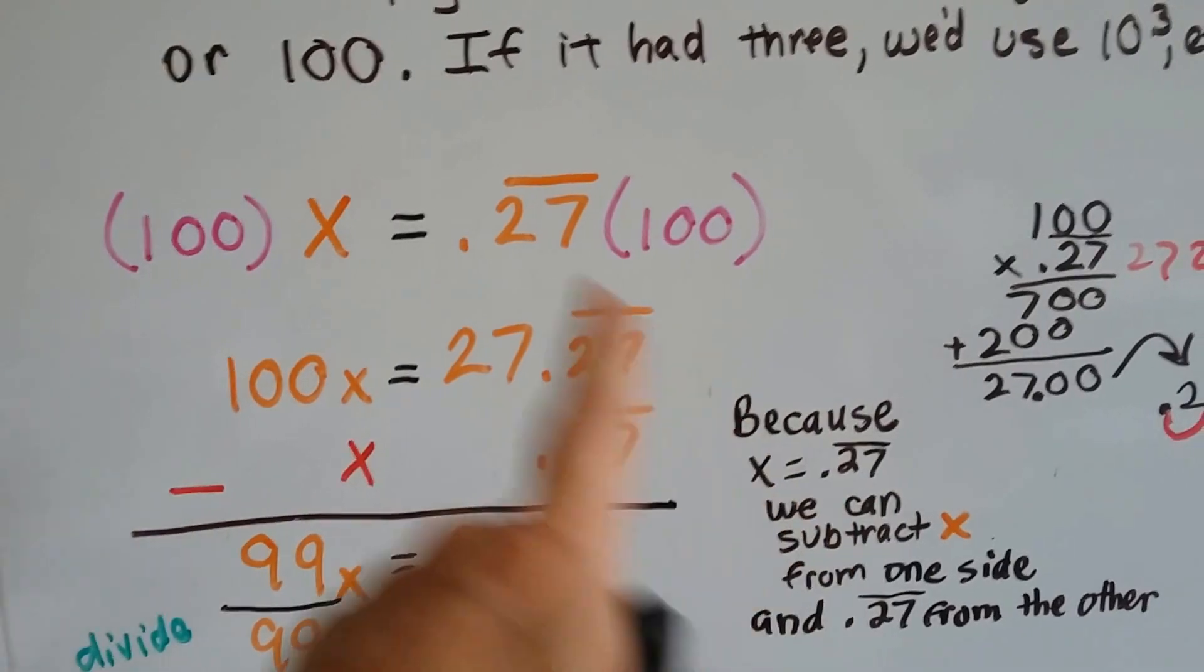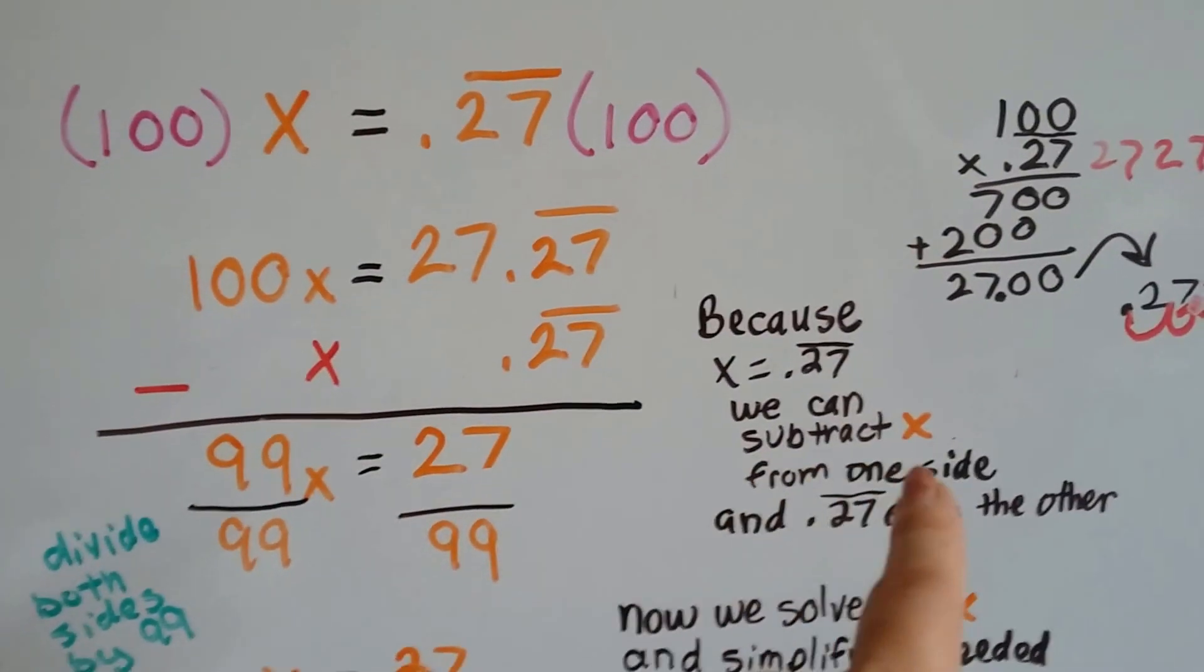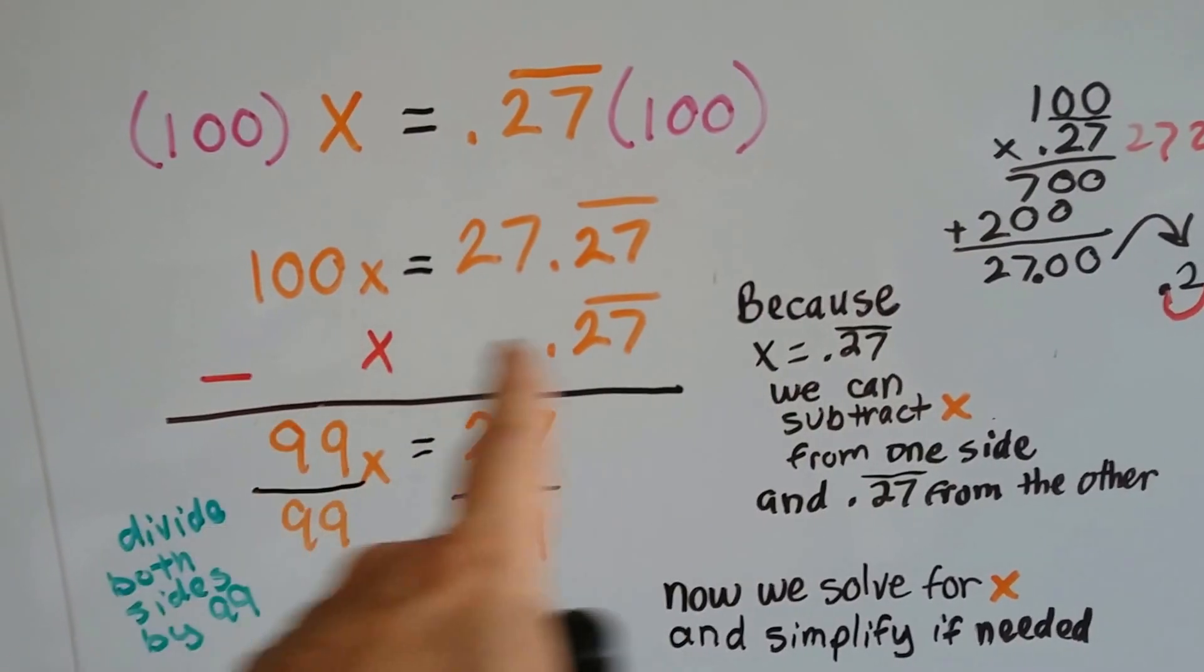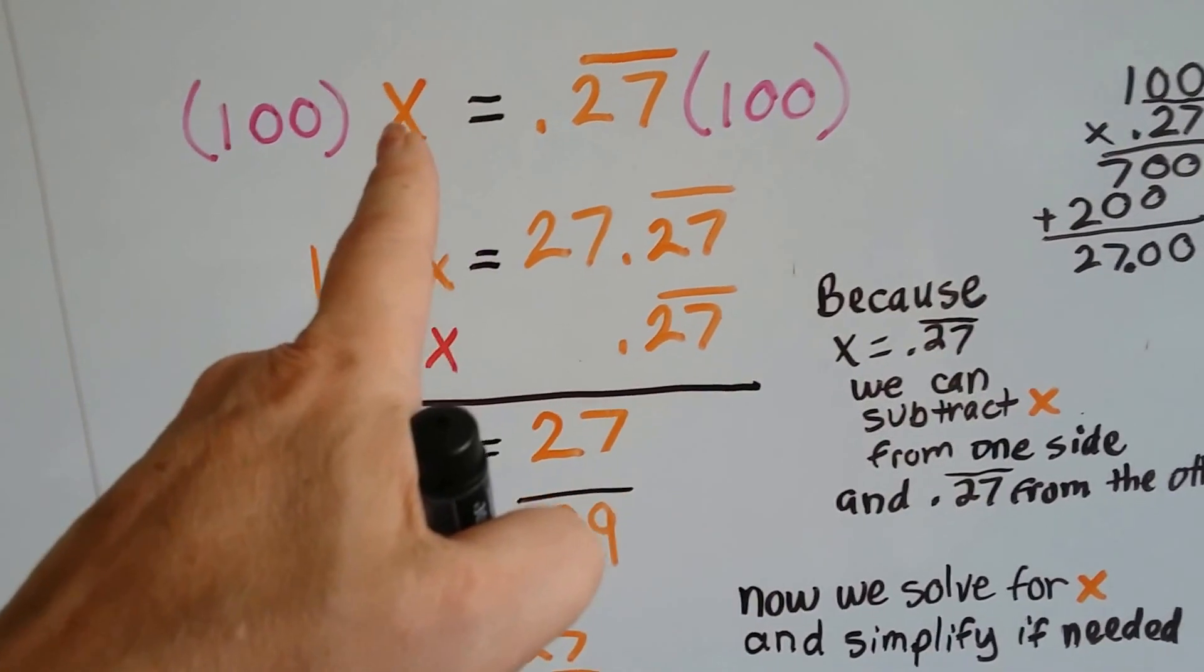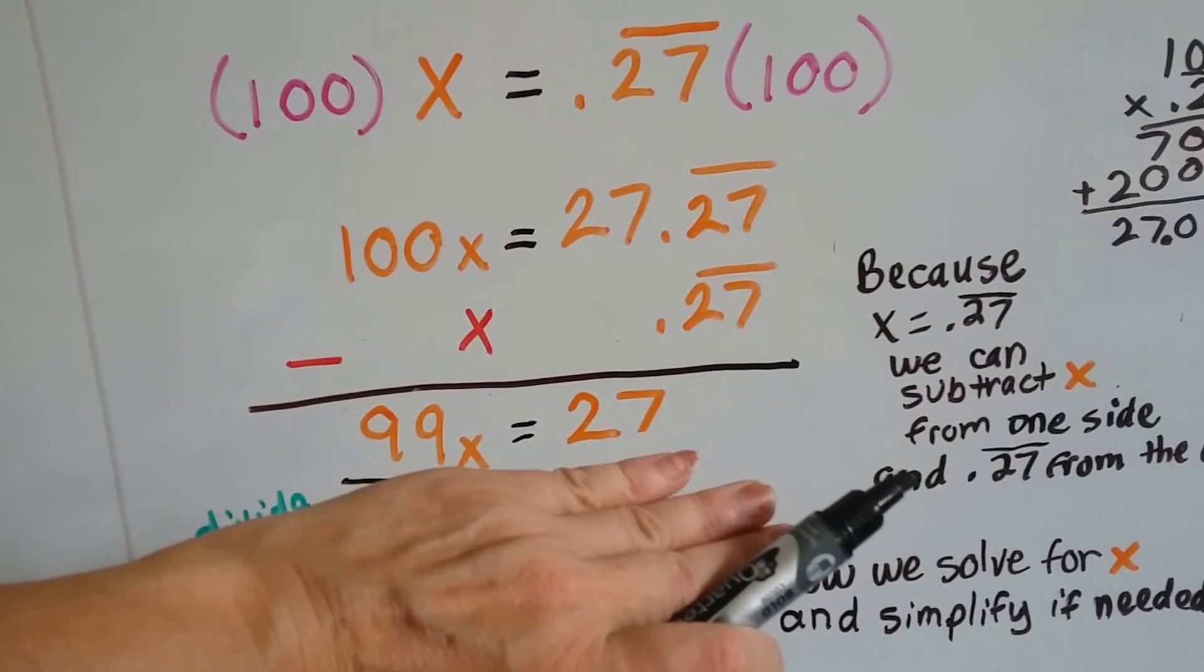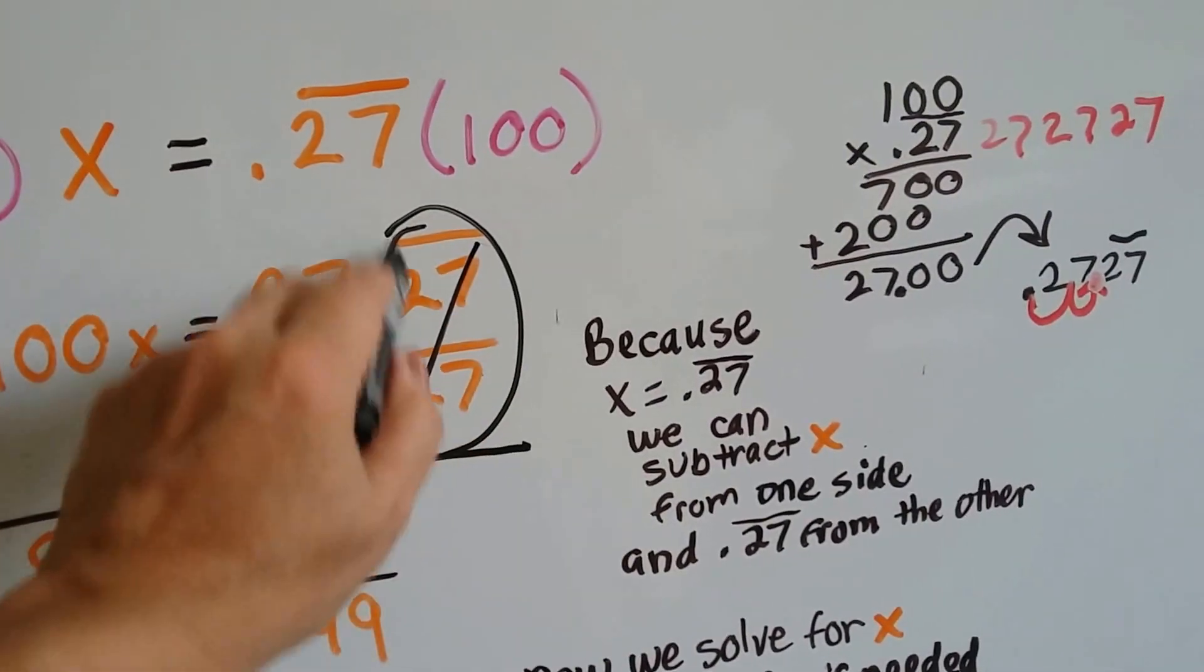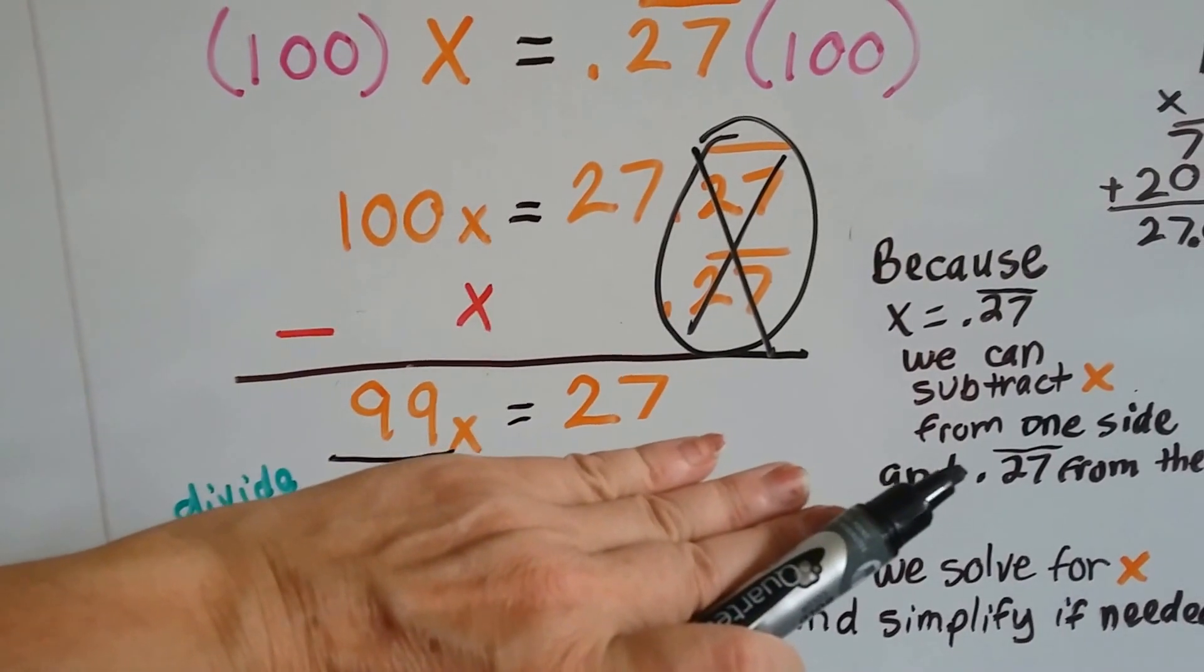Now, because x is equal to this .27 that repeats, we can subtract x from this side and the repeating .27 from this side. So, we're doing the same thing to each side of the equal sign because x equals that. If you have 100 x's and you take one of them away, you have 99 x's. And when we take the .27 away from this side, what we're doing is we're creating a zero pair and we're eliminating it. So, now we've got 99 x equals 27.